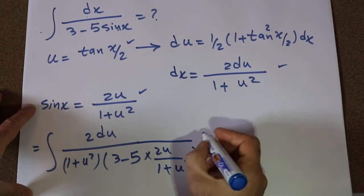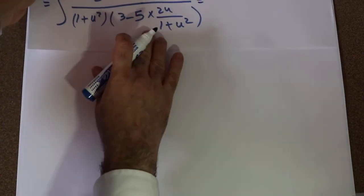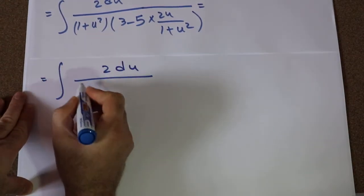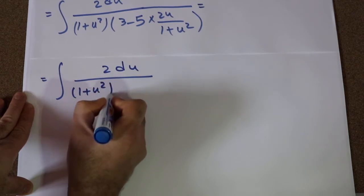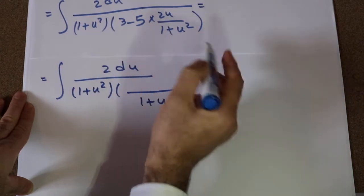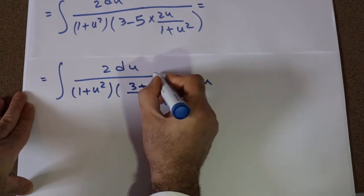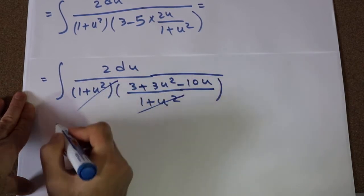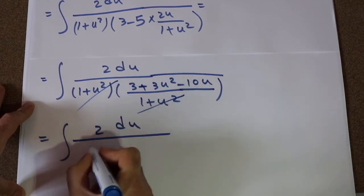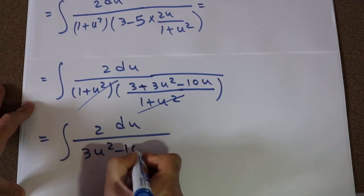Therefore this becomes the integral of 2 du times 1 plus u² divided by 1 plus u², and the denominator will be 3 plus 3u² minus 10u. Simplifying, this is equal to the integral of 2 du divided by 3u² minus 10u plus 3.